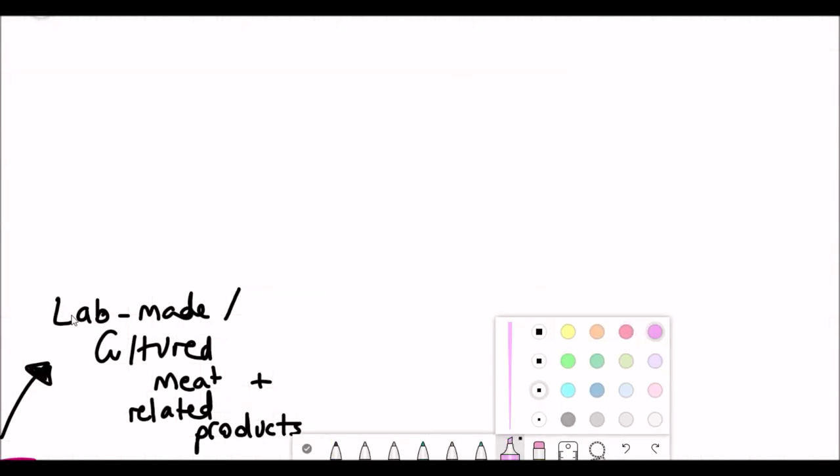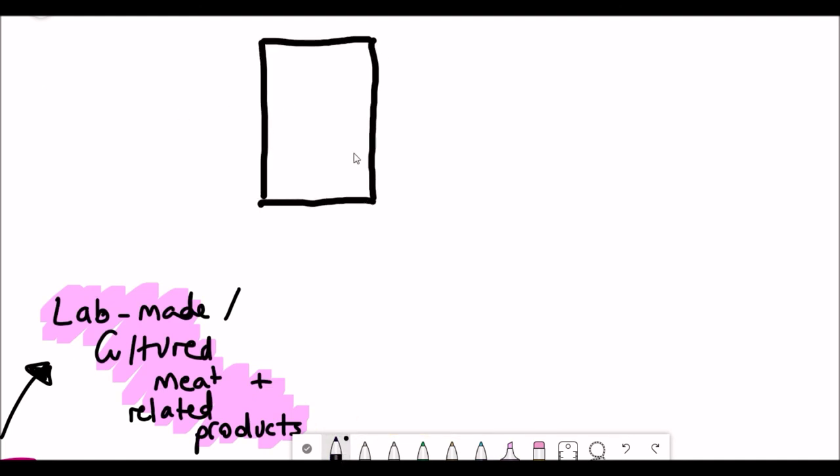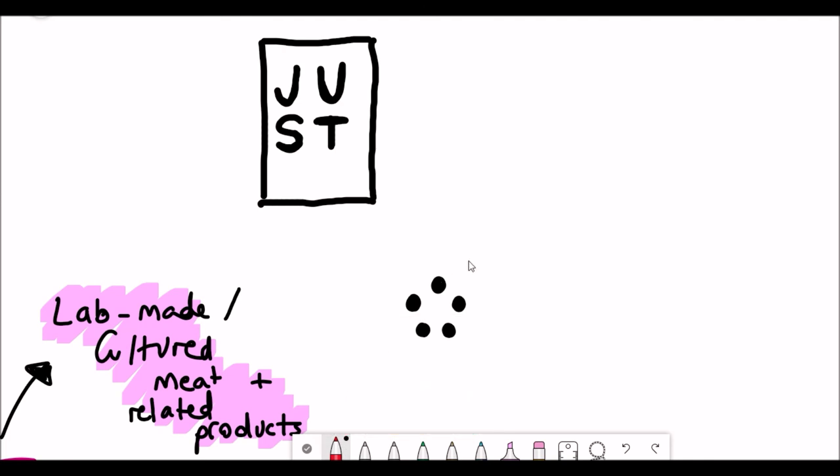But even more interesting technology is being developed whereby instead of doing plant-based products, you can still create animal meat and animal protein, but you use it from cultured meat. This is like lab-based meat. There's companies such as Just and Moser Meat that are trying to develop ways of being able to achieve this.